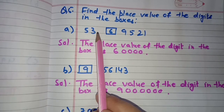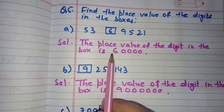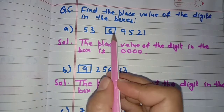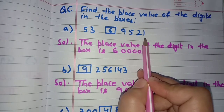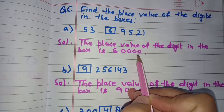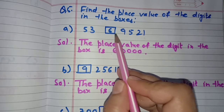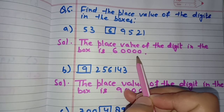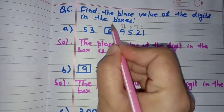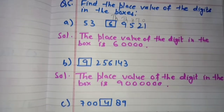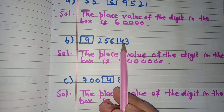Question number five: find the place value of the digit in the boxes. The first number is 53,69,521. For the boxed digit 6, count the digits after it — there are 4 — so write 6 followed by four zeros: 60,000. The place value of 6 is 60,000. You can also verify by mentioning the places above each digit.